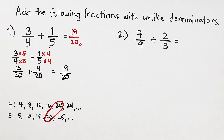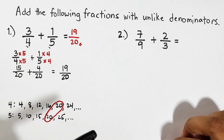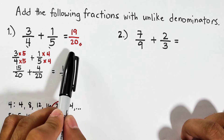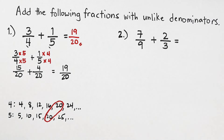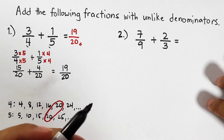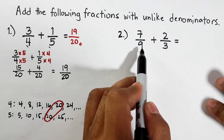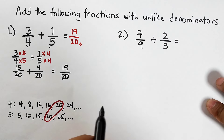By the way, if the fraction or your answer must be simplified or expressed in lowest terms, try to do that. But in this case it's already in lowest terms. So let's continue with number two — we have seven over nine plus two over three. We need to find the least common multiple between the two denominators.